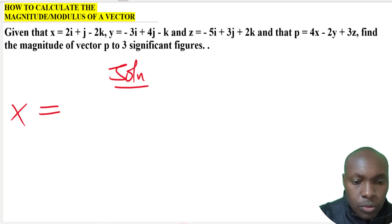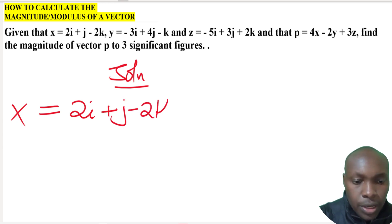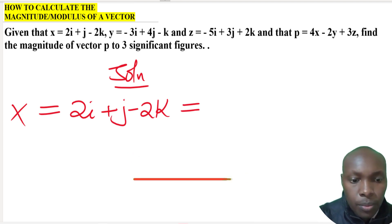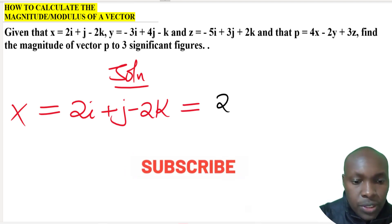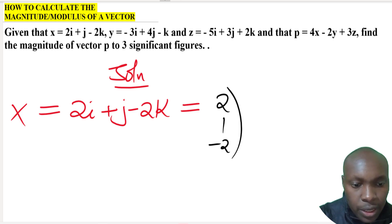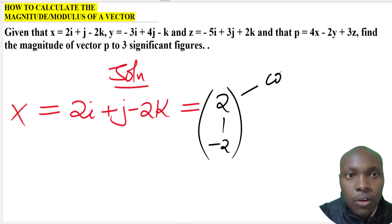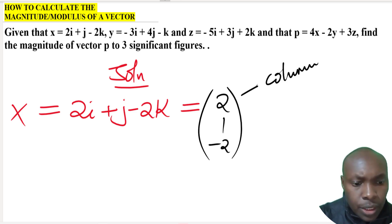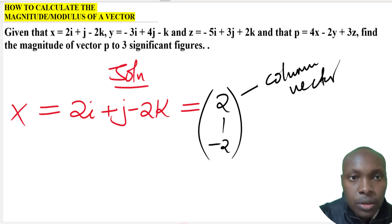x is given by 2i + j - 2k. We shall write this vector in column form by taking the coefficients of i, j, and k. The coefficient of i is 2, the coefficient of j is 1, the coefficient of k is -2, and we write it as a column vector. We do the same for y and also for z.